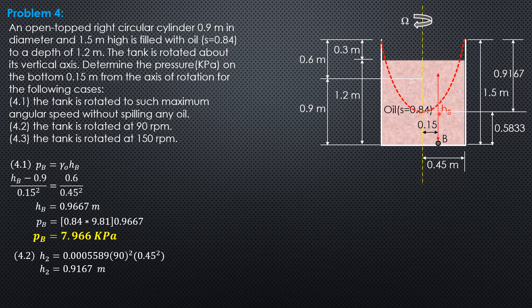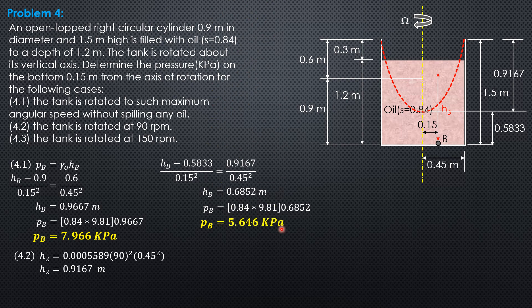Again, this is HB minus 0.5833. Apply squared property of parabola. HB minus 0.5833 over 0.15 squared equals 0.9167 over 0.45 squared. Solving for HB, HB is 0.6852 meter. So pressure at B is 0.84 times 9.81 times 0.6852. So pressure at B is 5.646 kilopascals.